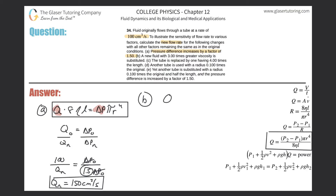Let's write it out again. Q times 8 times the viscosity times L will equal delta P times pi multiplied by R to the fourth. So now we want to compare the flow rate and the viscosity — notice how they are on the same side of the equal sign.